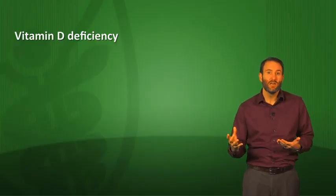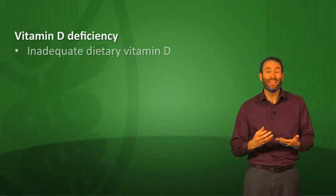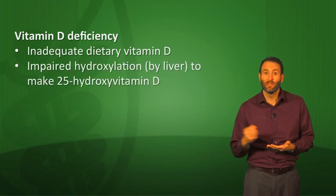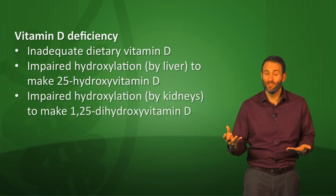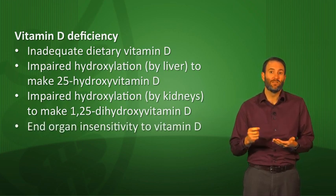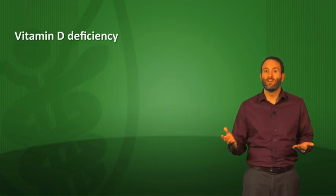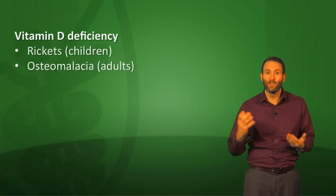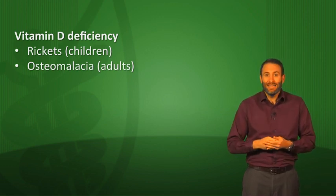Let's cover some vitamin D deficiency and resistance. This occurs by one of four mechanisms: inadequate dietary vitamin D; impaired hydroxylation by the liver to make 25-hydroxyvitamin D; impaired hydroxylation by the kidneys, so you can't make 1,25-dihydroxyvitamin D; or end-organ insensitivity to vitamin D. The end result of vitamin D deficiency or resistance is rickets in children and osteomalacia in adults — both are demineralization problems of the bone.